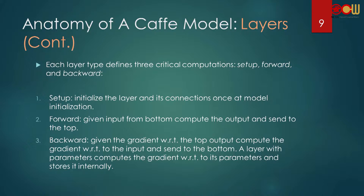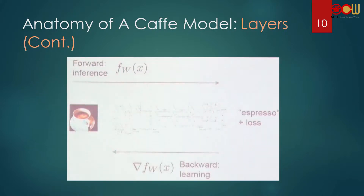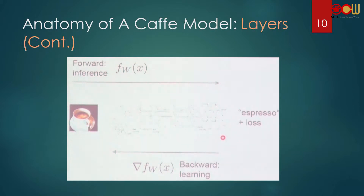That concept may be difficult to grasp, so let's look at a picture. This picture shows the directions of forward and backward. Here is the bottom layer and here is the top layer. If you have a picture without labels — you don't know what the picture shows — and you want the net to tell you what it is, that is called forward inference.